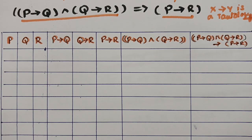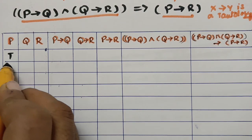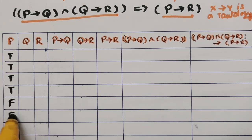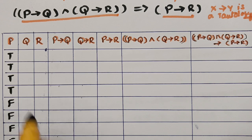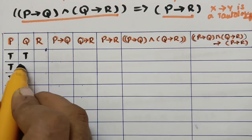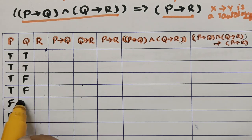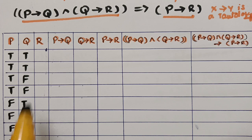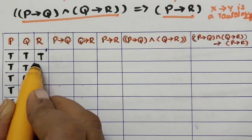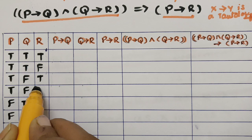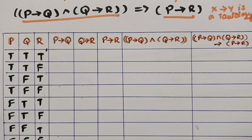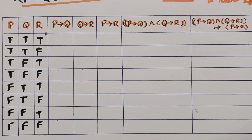For three propositions, we take true for four times and false for four times for p; true-true-false-false repeated twice for q; and alternating true-false for r. This gives us the 8-row truth table.